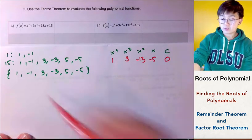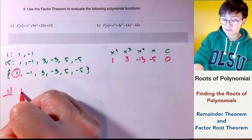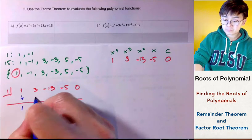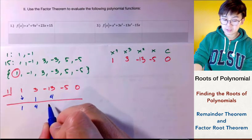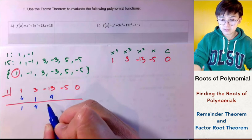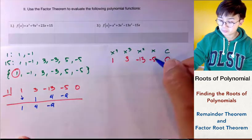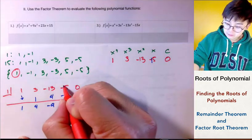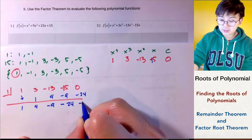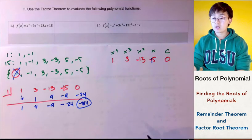Using synthetic division, we try 1 as a possible solution. With coefficients 1, 3, negative 13, negative 15, and 0, synthetic division gives us a non-zero remainder — we get negative 9, then negative 24, resulting in a remainder. So 1 is not a solution of this polynomial.